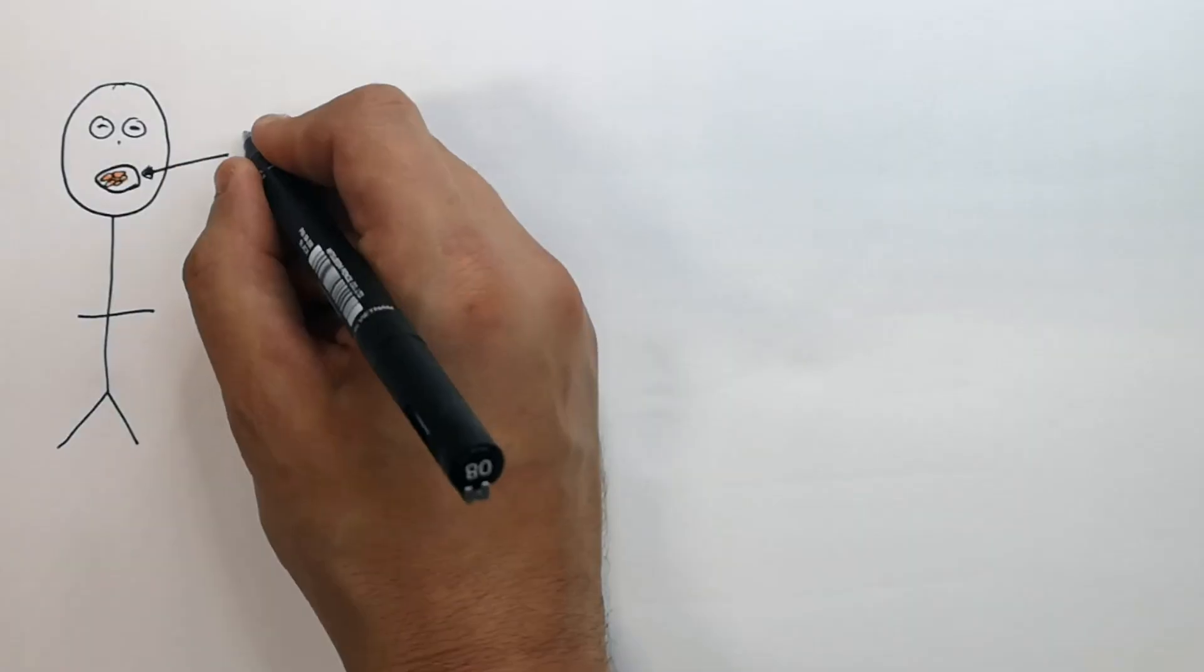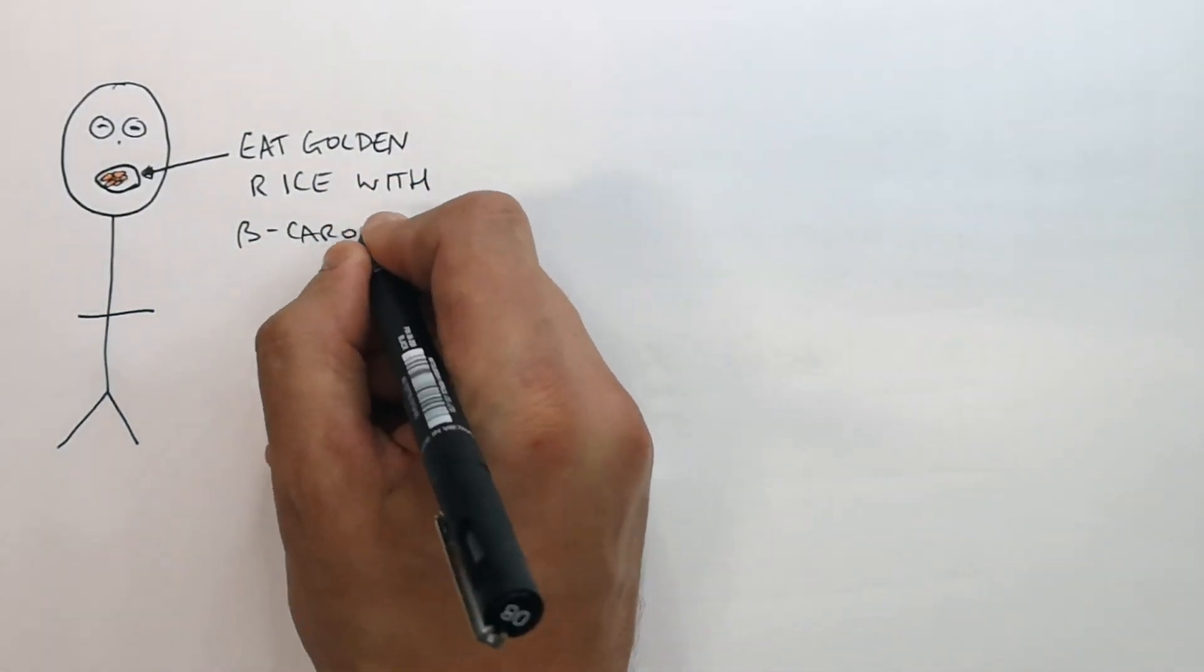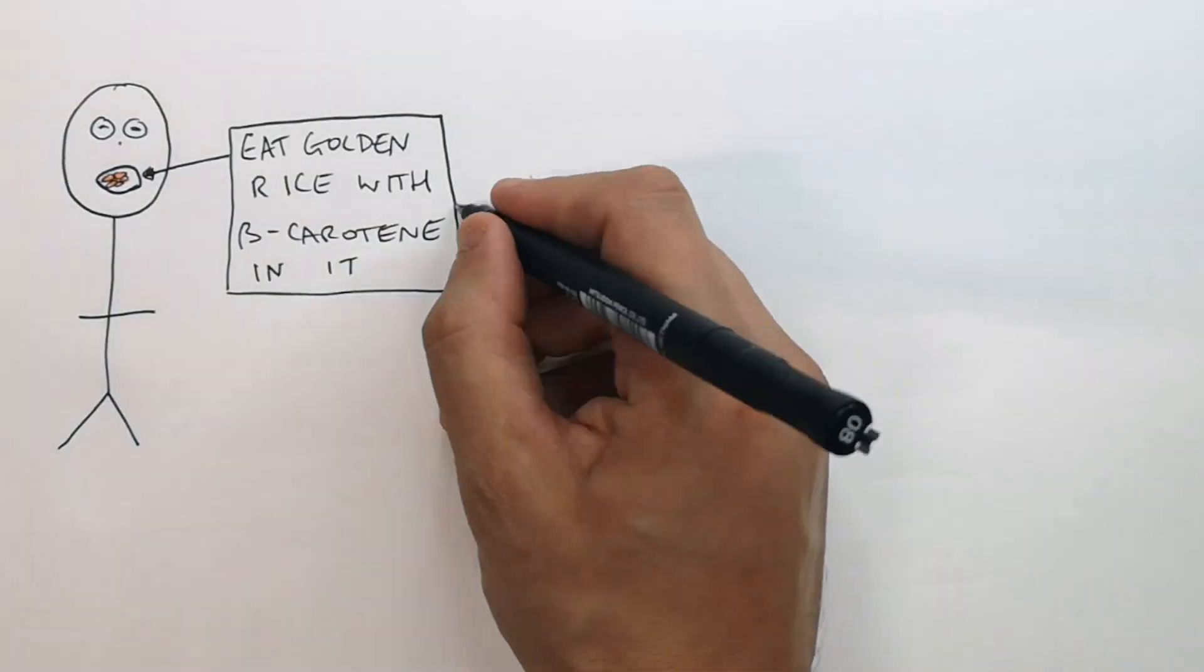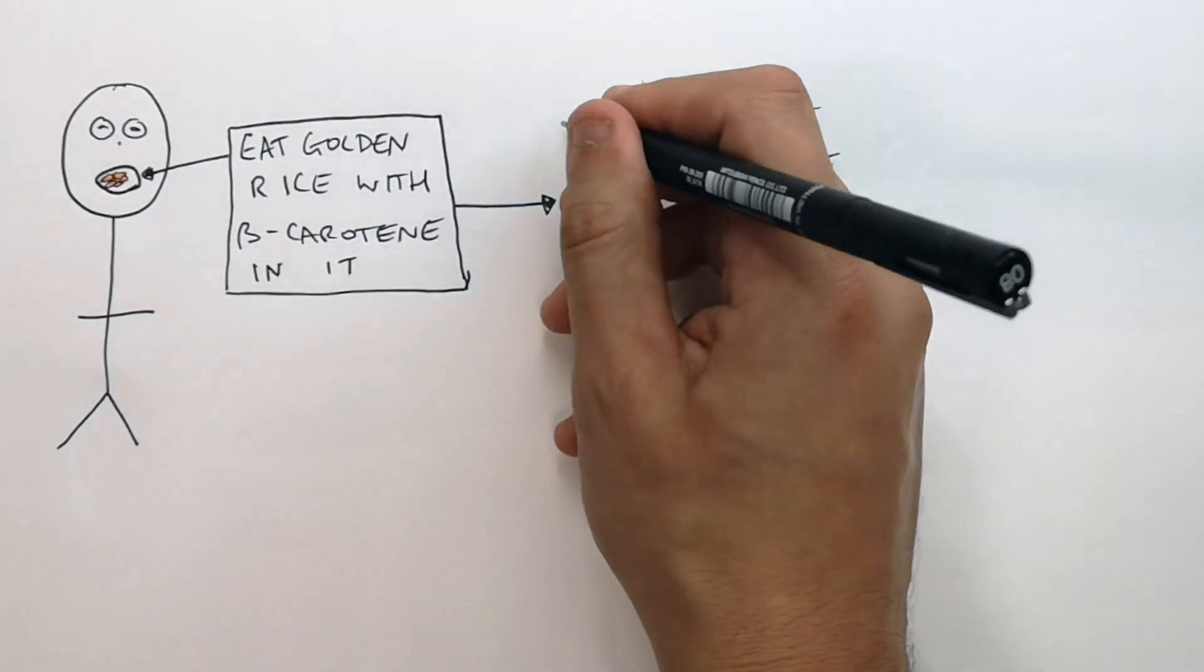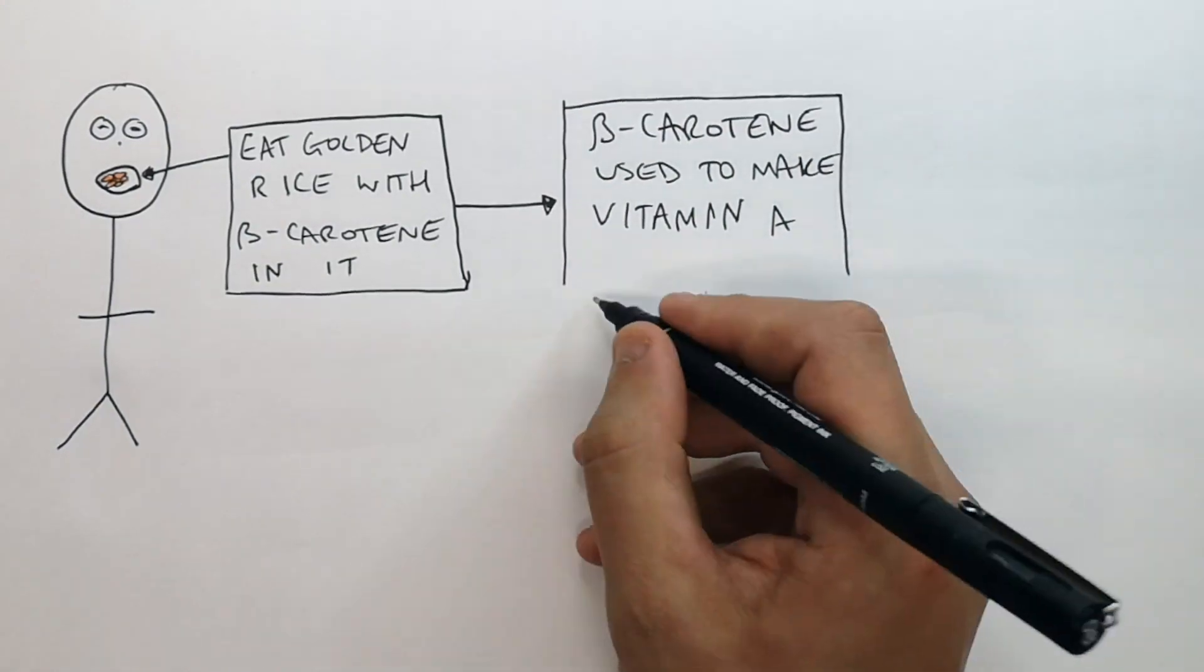So you can now eat the golden rice, which has got the beta-carotene gene in it. The beta-carotene is used by the body to make vitamin A.